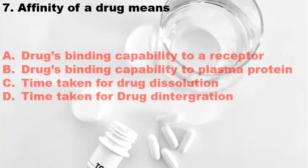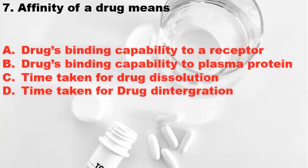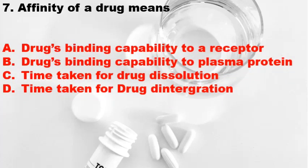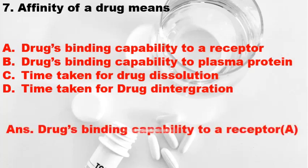Question 7: Affinity refers to — Option A: Drug's binding capacity to a receptor, Option B: Drug's binding capacity to plasma protein, Option C: Time taken for drug dissolution, Option D: Time taken for drug disintegration. The correct answer is Option A, drug's binding capacity to a receptor.